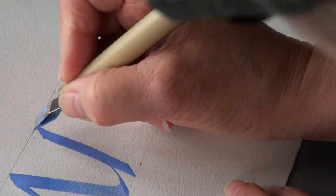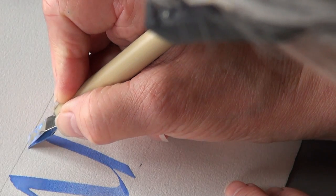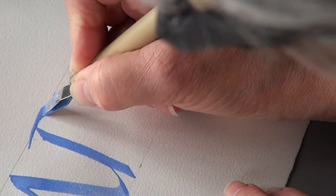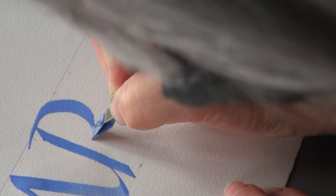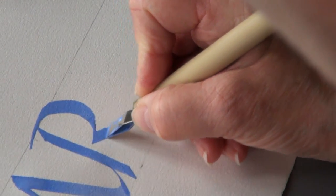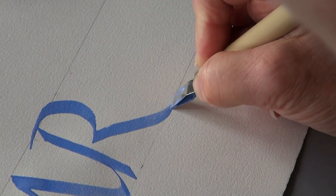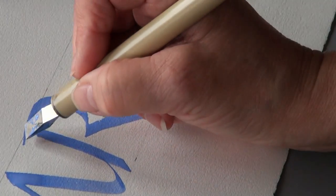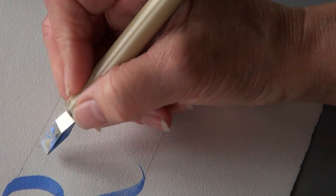For the R, when I come back in, I flatten the pen to make the bowl. When I come around, I don't touch quite to the stem of the R. I refill to make the diagonal or the tail of the R.